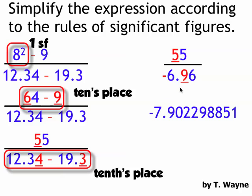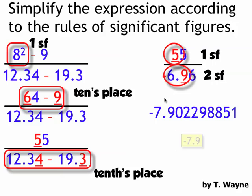For division, I just count the number of sig figs. So on the top I have 1, and the bottom I have 2. That's the 6 and the 9. So the least number 1 sig fig is where I round. So the negative 7.902298851 rounding to 1 sig fig becomes negative 7.9.